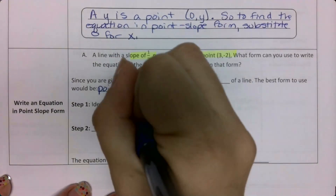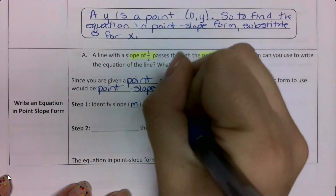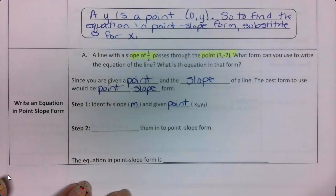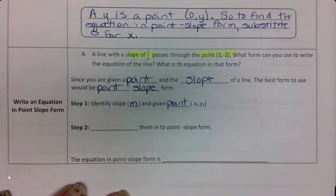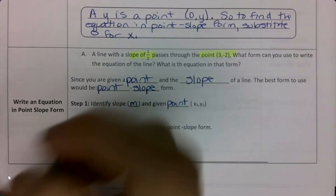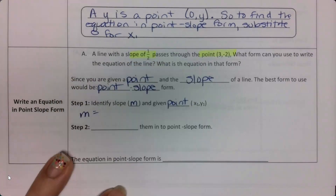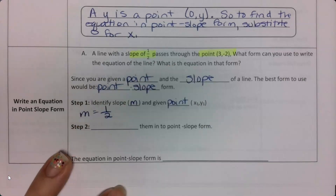My first step is to identify my slope m and my given point x1, y1. So what was my slope? My slope was one-half.